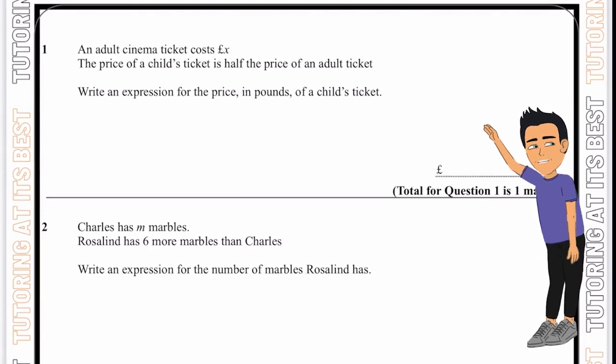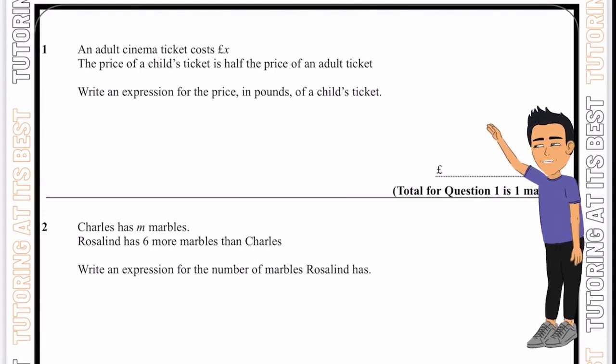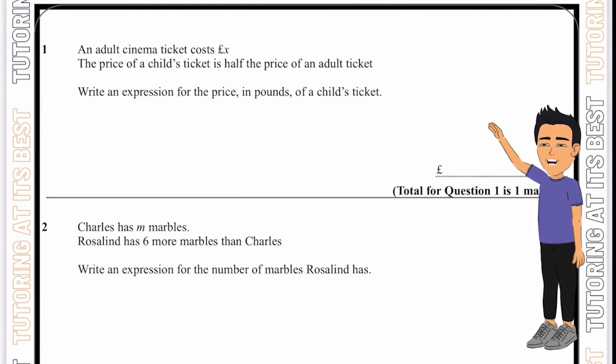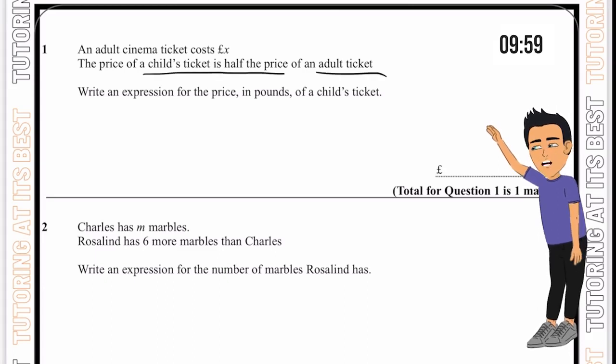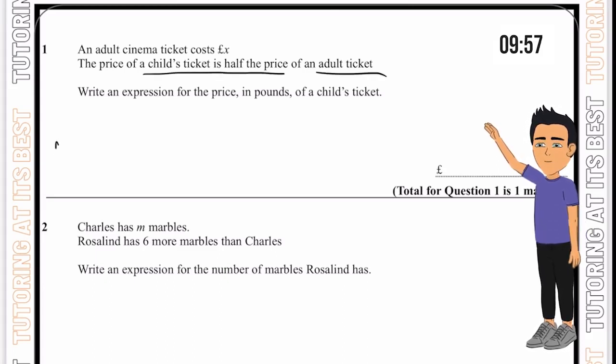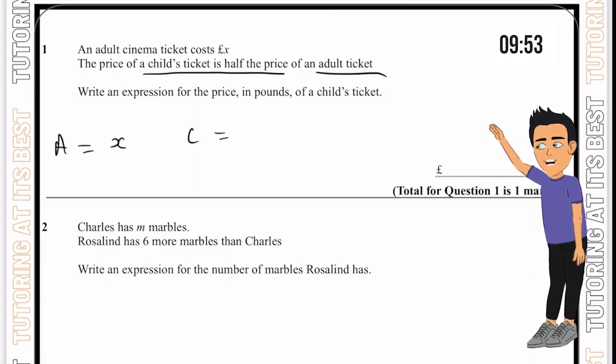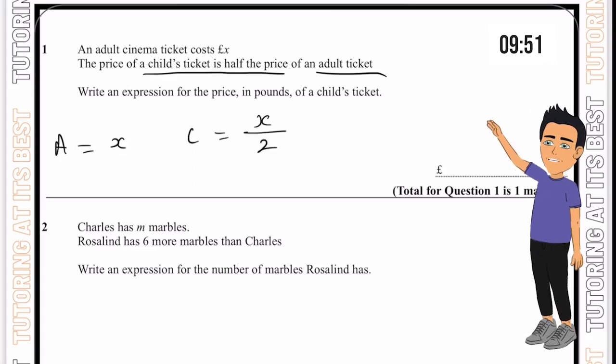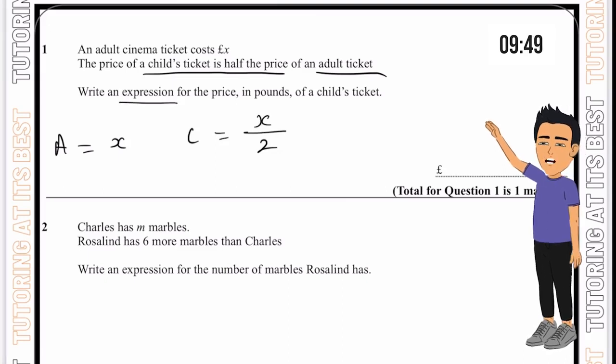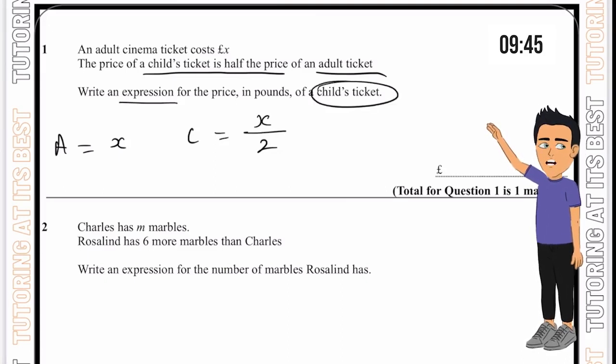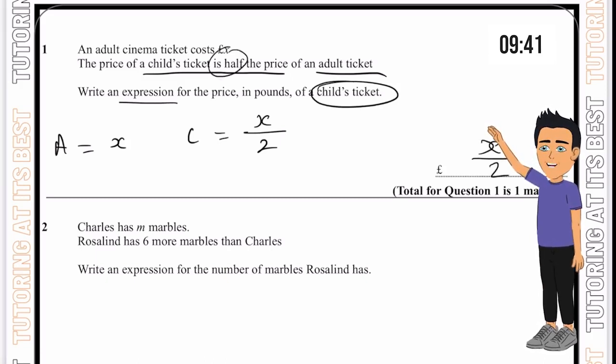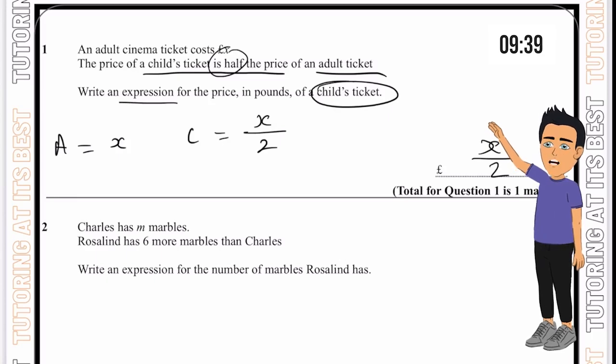An adult cinema ticket costs x pounds. The price of a child's ticket is half the price of an adult ticket. So if an adult equals x, then a child must equal x divided by 2. When we're looking for an expression for the child's ticket, we know it is half of the adults. So we can simply write x over 2.